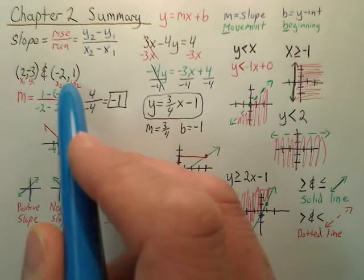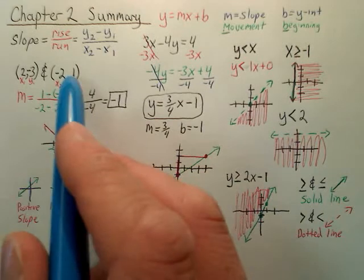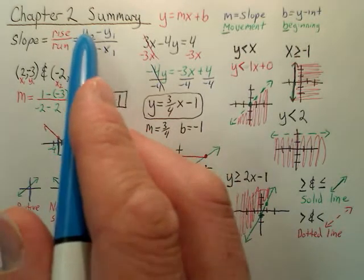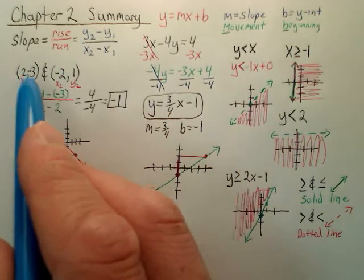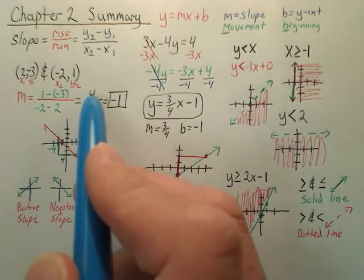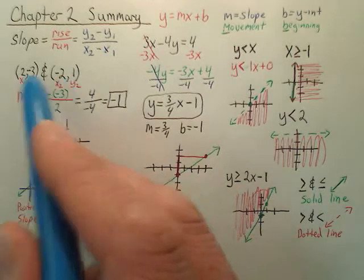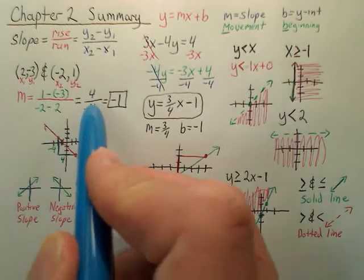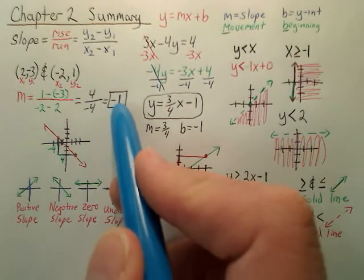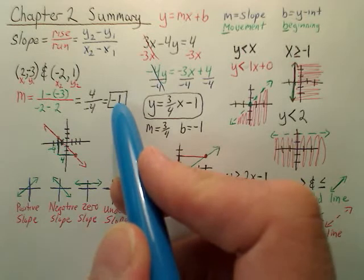All we did is we took, according to the formula, you took y₂ minus y₁, or the second y minus the first y, which gives you 4. And we took the second x minus the first x, so -2 minus 2 would be -4. We reduce that to -1. The slope is -1.